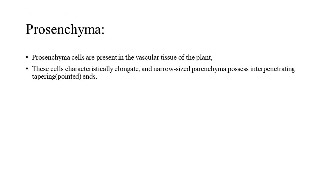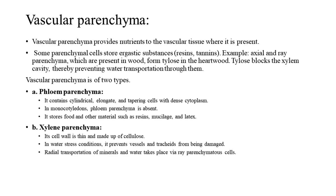Prosenchyma cells are present in the vascular tissue of the plant. These cells are characteristically elongate and narrow, possessing interpenetrating tapering pointed ends. Vascular parenchyma provides nutrients to the vascular tissue where it is present. Some parenchymal cells store ergastic substances such as resins and tannins. Axial and ray parenchyma, which are present in wood, form tyloses in the heartwood. Tyloses block the xylem cavity, thereby preventing water transportation through them.